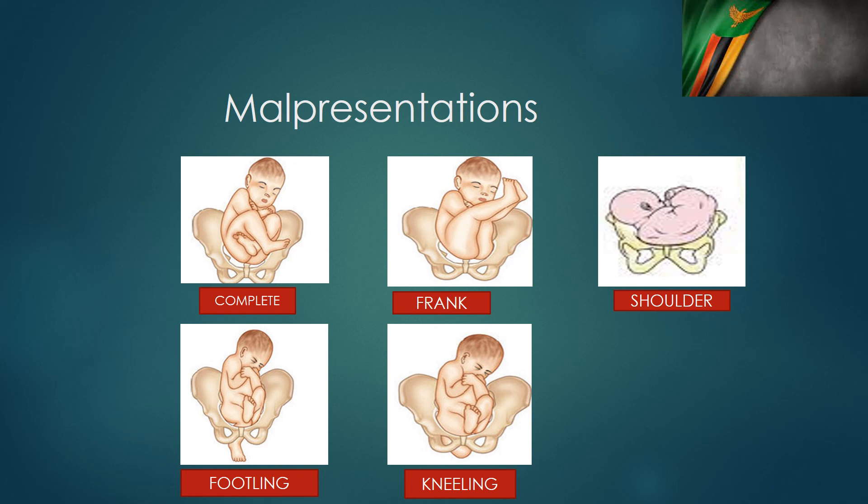Shoulder presentation usually comes with a transverse lie. In a shoulder presentation, the denominator is the scapula, so we would say left scapula anterior, right scapula posterior, and so on. When we have a transverse lie, delivery is by caesarean section, and these are usually difficult caesarean sections — you may need to perform a classical caesarean to extract the baby easily.